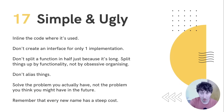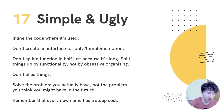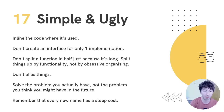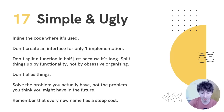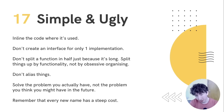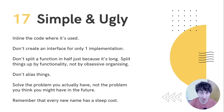The motto of 'simple and ugly' is very useful. Just because something looks ugly in code doesn't mean it's a bad implementation. Always try to inline the code where it's used if it's only used once, because code is much easier to read and understand than a name. Don't create an interface if you only have one implementation — wait until you have multiple implementations before deciding what the shared pieces should be. Don't split a function in half just because it's long — split by functionality, not obsessive organization. Don't break something in half when those halves are only ever used together.